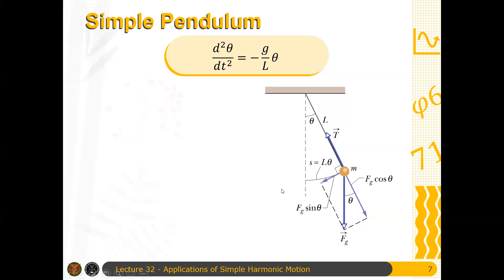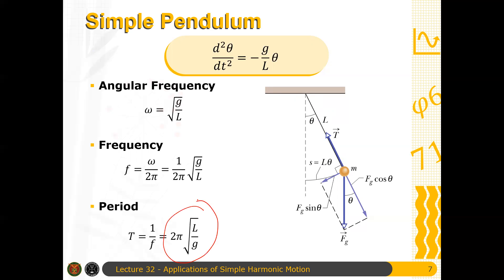This is the equation of motion of a simple pendulum for small oscillations. Again, importante dito na dapat small yung oscillations. And then the angular frequency is just given by square root of g over l. The frequency is 1 over 2 pi square root of g over l. And the period is 2 pi square root of l over g. This equation, familiarize yourself with it. Importante ito. This 2 pi square root of l over g. Do not forget that.